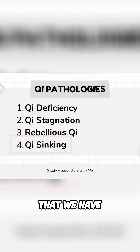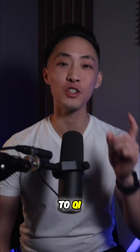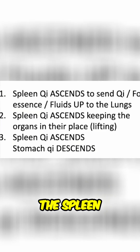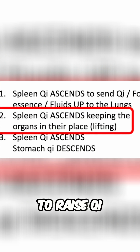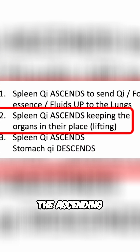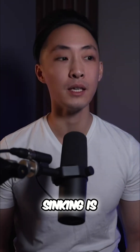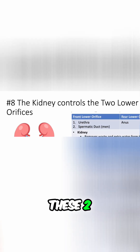The last qi pathology is qi sinking, which is actually related to qi deficiency. There are two main organs where qi sinking can happen. The spleen has a function to hold the organs in place and to raise qi — the ascending of qi. Another organ involved with qi sinking is the kidney, which controls the two lower orifices: the urethra and the anus.